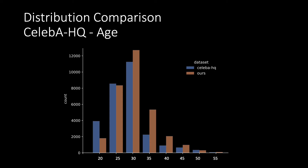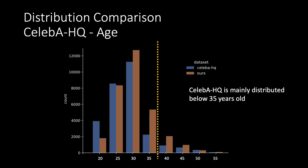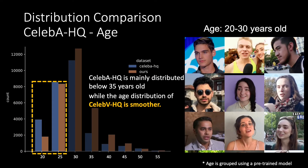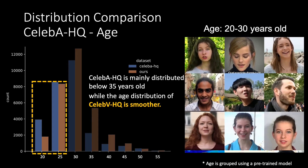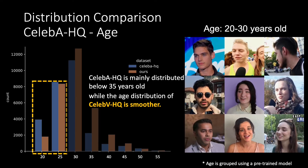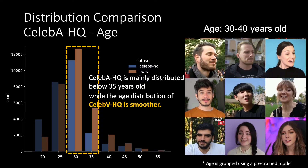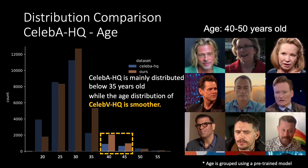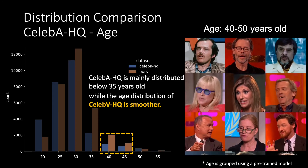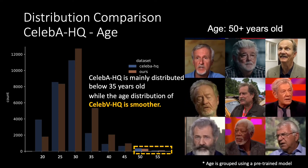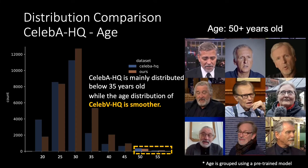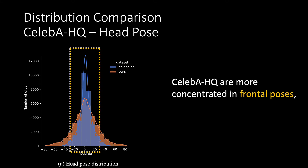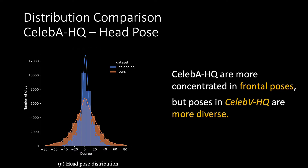The age distribution is biased towards certain age groups. We can see that the age in CelebHQ is mainly distributed below 35 years old, while the age distribution of CelebVHQ is smoother. We further measure the head pose distribution as it roughly reflects the range of motion. CelebHQ poses are more concentrated in frontal poses, but poses in CelebVHQ are more diverse.